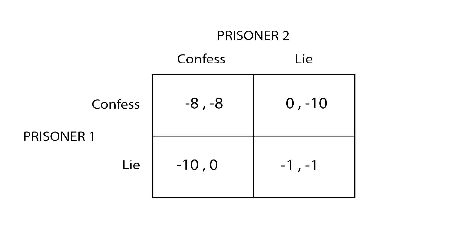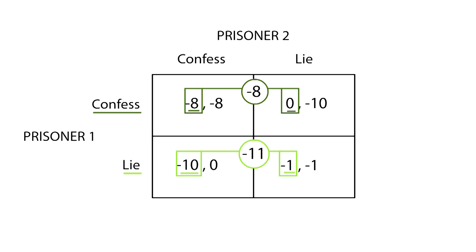If player 1 chooses to confess, he can either get −8 or 0, depending on what the other player does. By adding both values, we get the expected value of −8. If player 1 chooses to lie, he can get either −10 or −1, depending on what the other player does, giving an expected value of −11. Confess is therefore the dominant strategy since it has a higher expected value than strategy lie.